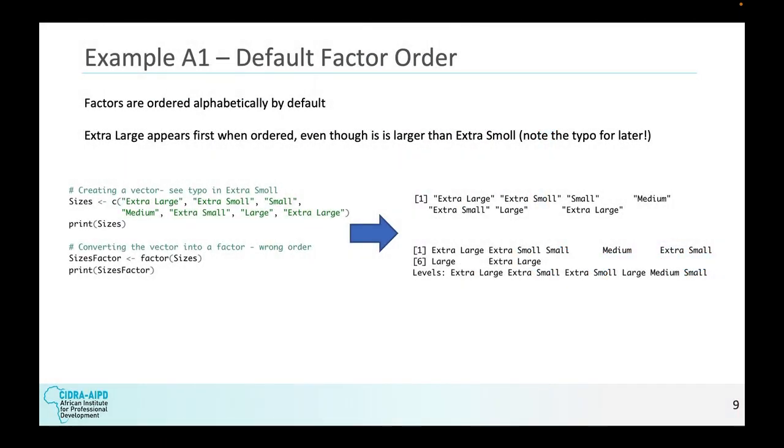So some examples. Example A1, default factor order. Factors are ordered alphabetically by default. So for instance, extra large appears first when ordered, as you can see down here where my cursor is, even though it is larger than extra small because we did not specify the factor order anywhere yet. So we want to note that typo in extra small for later because we are going to make a change. But to show you the process of creating a factor, first you have to create a vector where we have the sizes that we print the sizes. This is what the vector looks like in that specific order, convert it into a factor, and then print the factor where it will show the levels. What is the order of the levels that are contained within? Each observation is a different level.